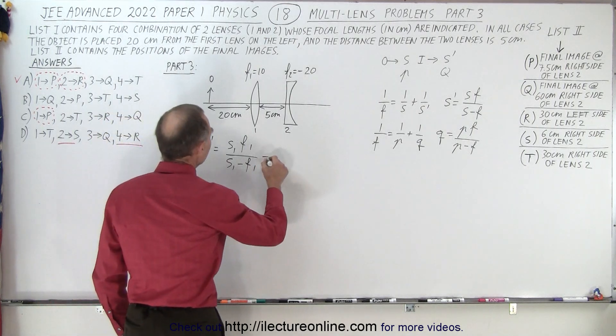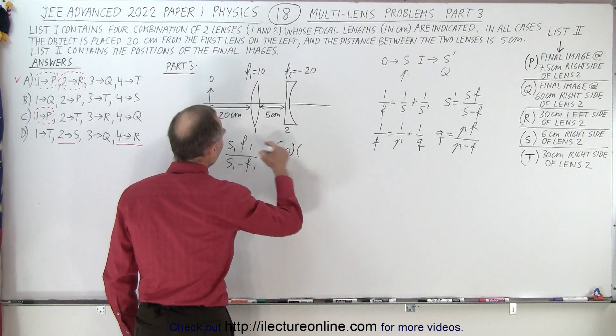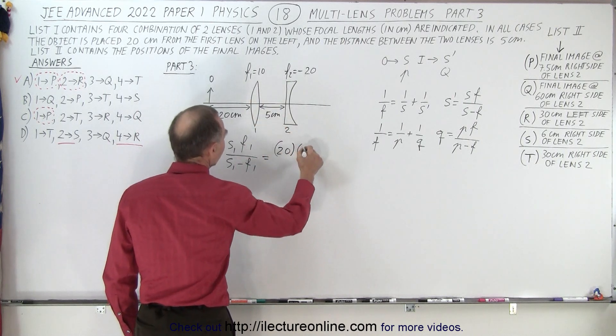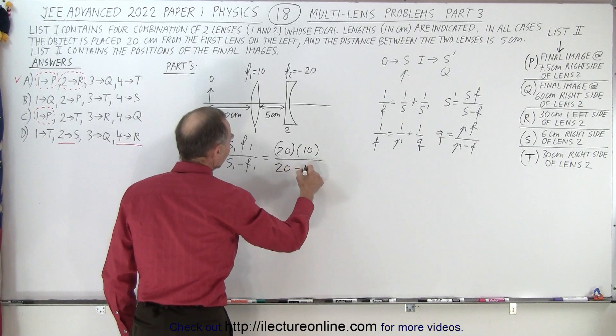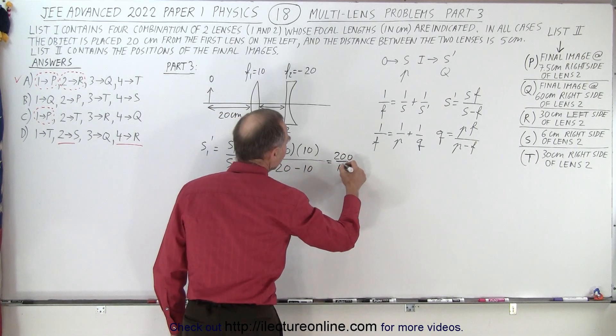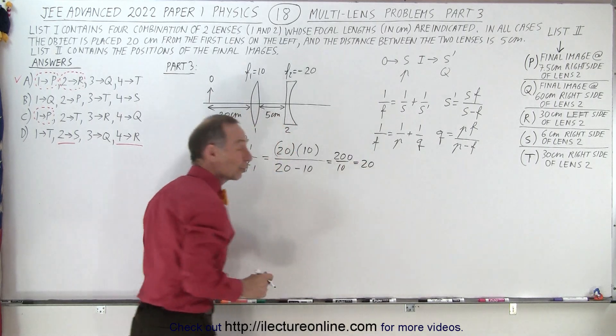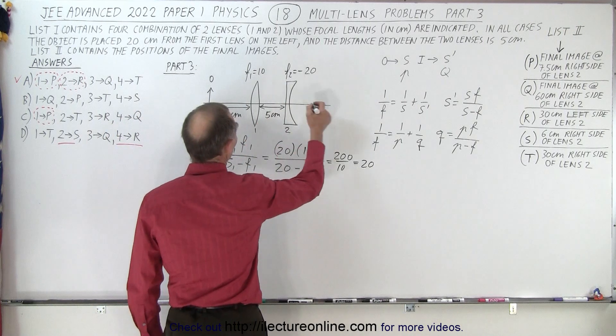Plugging in the numbers, we get S1, which is the object distance of 20 centimeters, times the focal length of the first lens of 10 centimeters, divided by 20 minus 10. That gives us 200 divided by 10, which is 20 centimeters, placing the first image 20 centimeters to the right of lens 1.